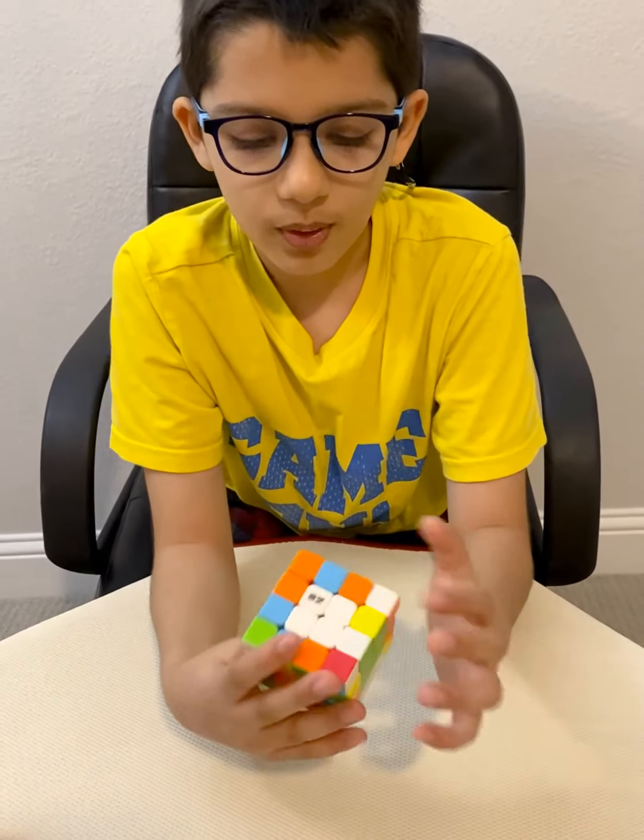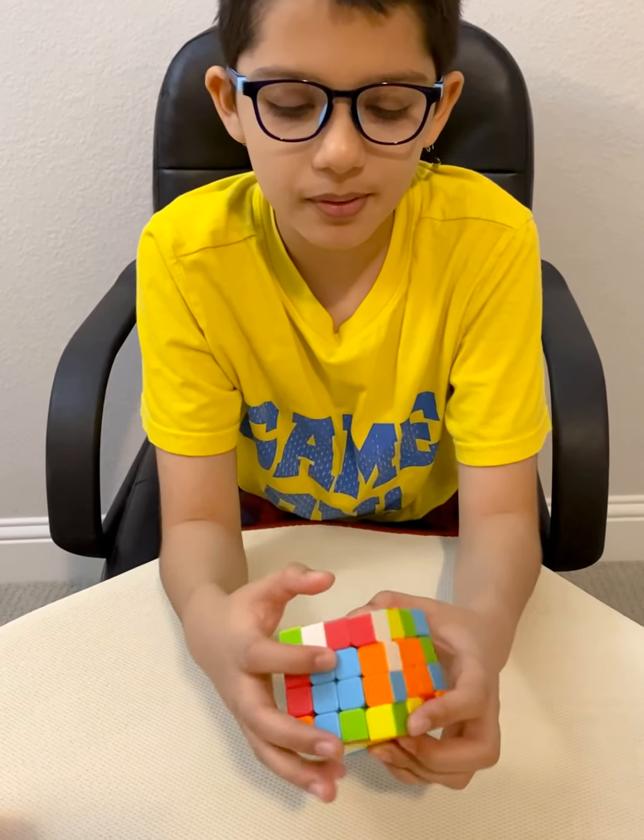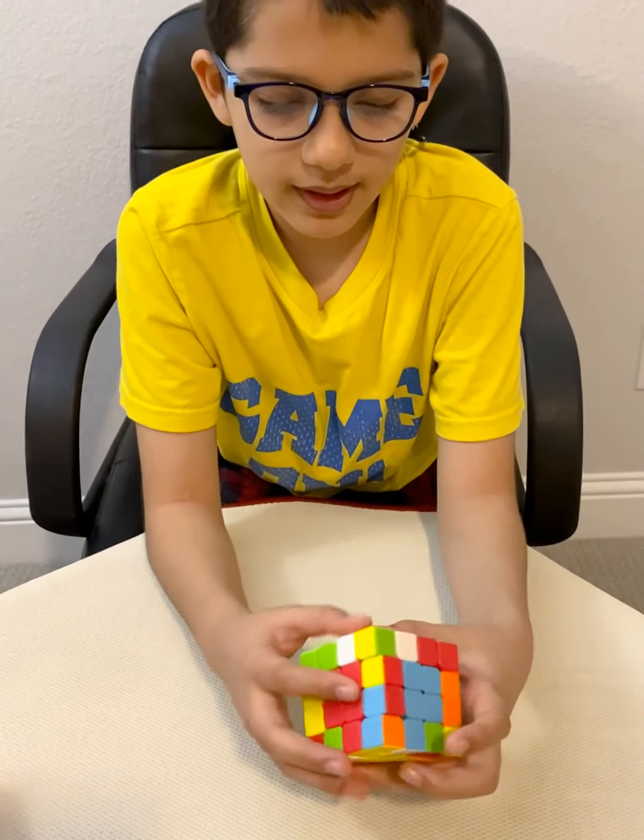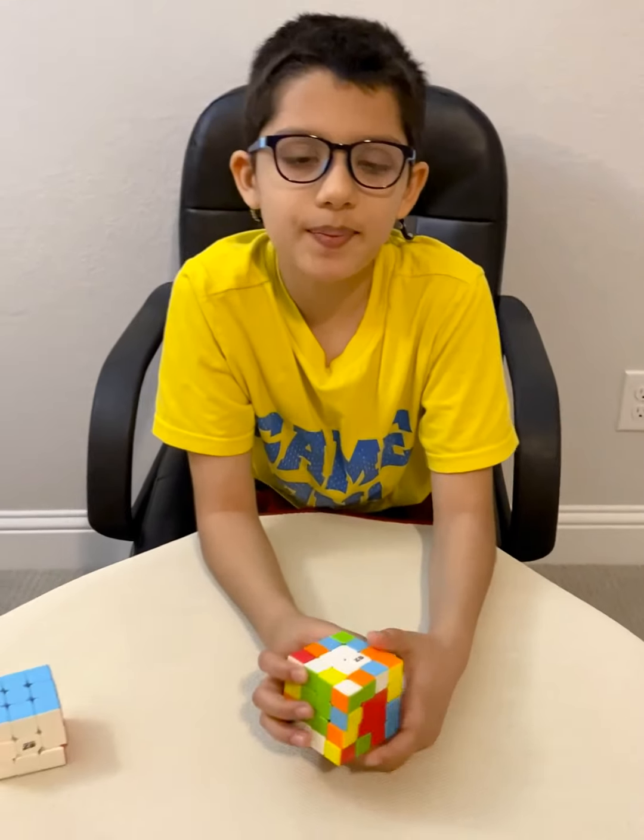You can see I've solved all of them here. White opposite is yellow, green opposite is blue, orange opposite is red. So in this video we're going to be learning how to solve the edges.